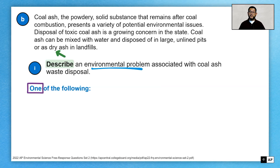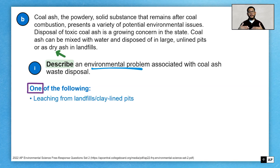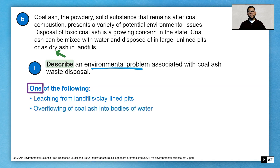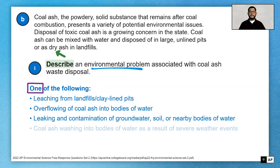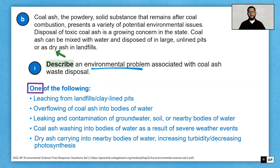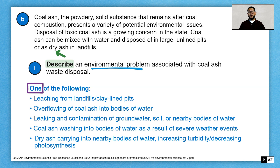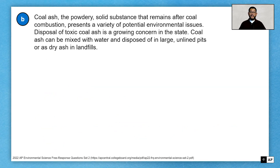Here are some examples — just one of the following, don't give many. You could describe leaching from clay-lined pits, saying water is going to leach through down into the water. You could say coal ash will overflow into bodies of water, or that it will cause contamination of groundwater, soil, or nearby bodies of water. Or you could say dry ash is going to carry into nearby bodies of water and increase turbidity or decrease photosynthesis. Lots of examples could be used here, but we only want one.